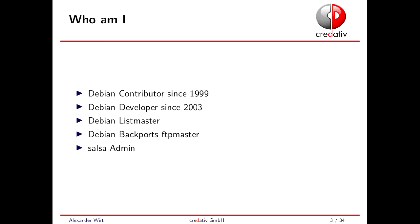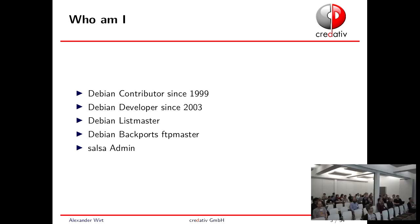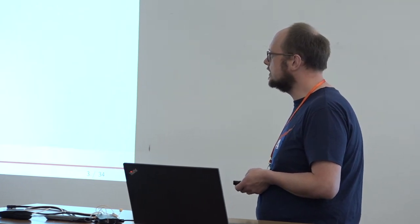Who am I? I'm Alexander Viert, also known as FOMAR. I'm a Debian contributor since 1999, Debian developer since 2003. I also have several roles in Debian — I'm a list master for something like 15 years, and I'm the Backports FTP master. I was a former admin of Alioth, which preceded Salsa, and now I'm a Salsa admin. For Salsa, I'm not alone — there's also Bastian Blanc alias Valdi, and Jörg Jaspart alias Ganef, who are also Salsa admins.